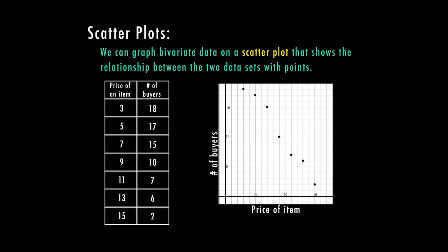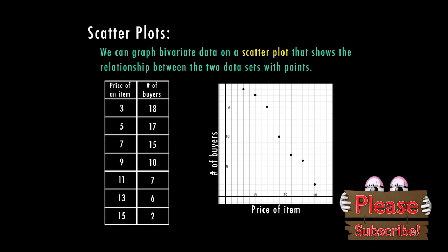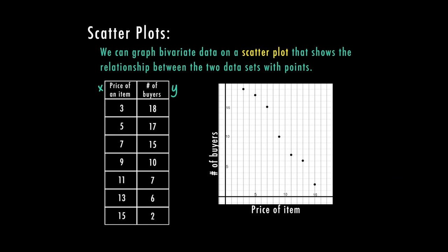So here we have the price of an item in the table on the left. And then on the right, we have the number of buyers. The price of the item goes with our x, and the number of buyers is our y.